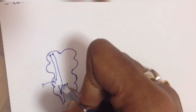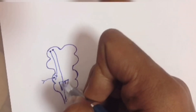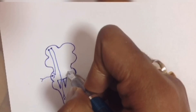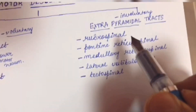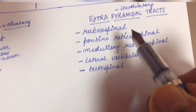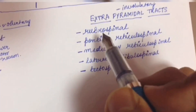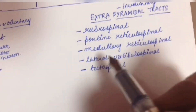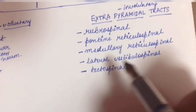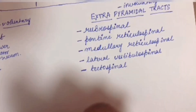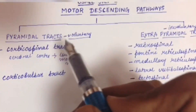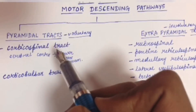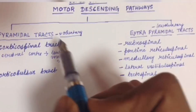The tracts that pass through these inverted pyramids are named pyramidal tracts, and the tracts that pass outside the pyramid are known as extrapyramidal tracts. The main tracts of the extrapyramidal system are the rubrospinal tract, pontine reticulospinal tract, medullary reticulospinal tract, lateral vestibulospinal tract, and tectospinal tract. We will not go into detail of these tracts as the main aim is to clarify the difference between pyramidal and extrapyramidal tracts.